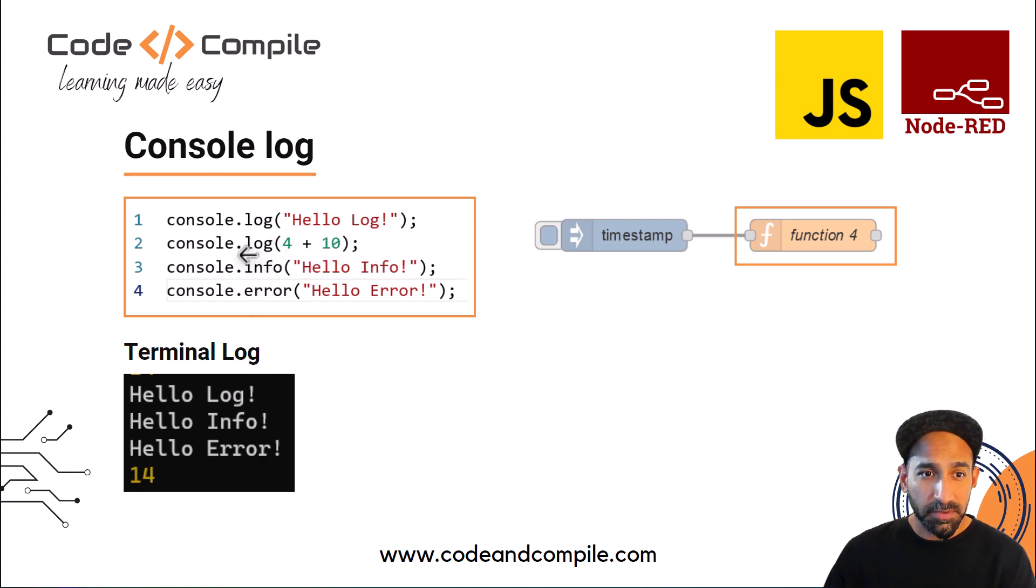If you type console.info instead of log, it will display in white background. If you type console.error, it will show as white but as text. This is quite different in Visual Studio where console.error is red, but in Node-RED it's coming as white as well.